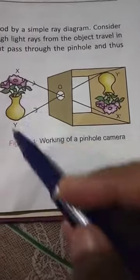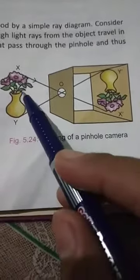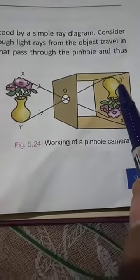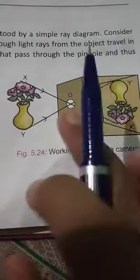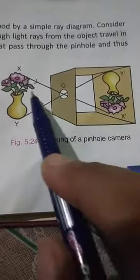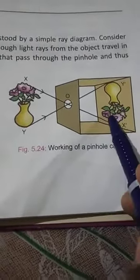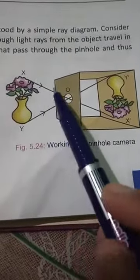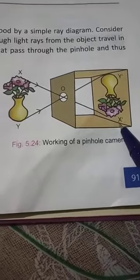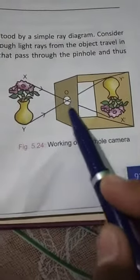Any object XY kept in front of the pinhole of this camera — light rays from the object travel in all directions, but here we are taking only two rays to show clearly how the image is forming. These two rays pass through this hole and contribute to forming the image on the screen. A ray of light coming from point X, and X dash Y dash is the image.